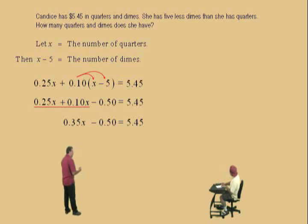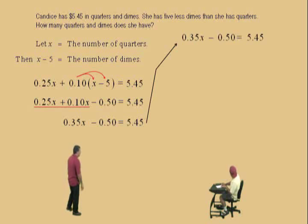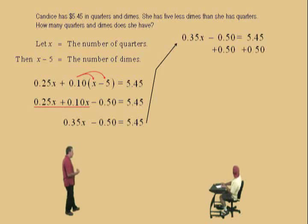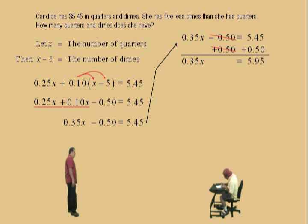And now, what do we do next to solve for x, Charlie? Add 0.5 to both sides. That's right. So let's add 0.50 to both sides, cancel out there. Left-hand side is 0.35x. Right-hand side is what, Charlie? 5.95. Very nice there.